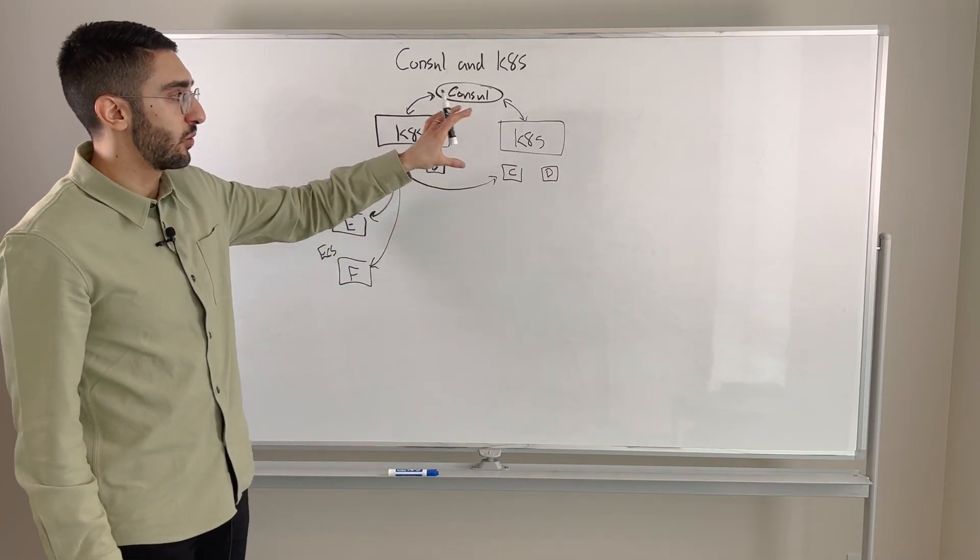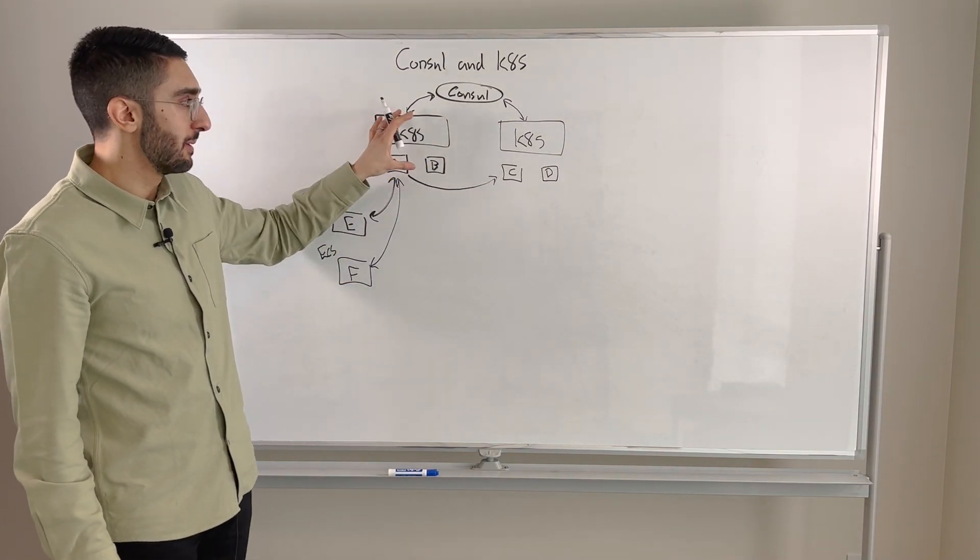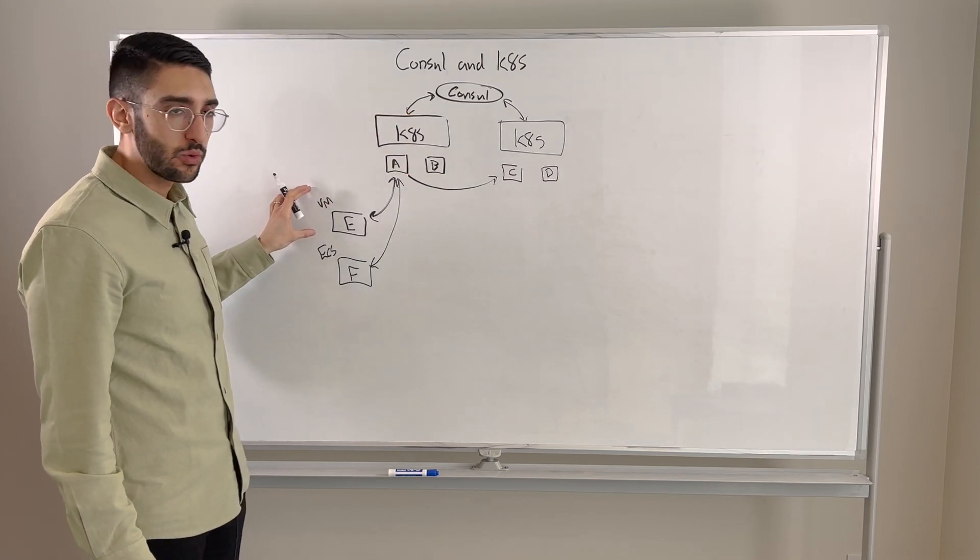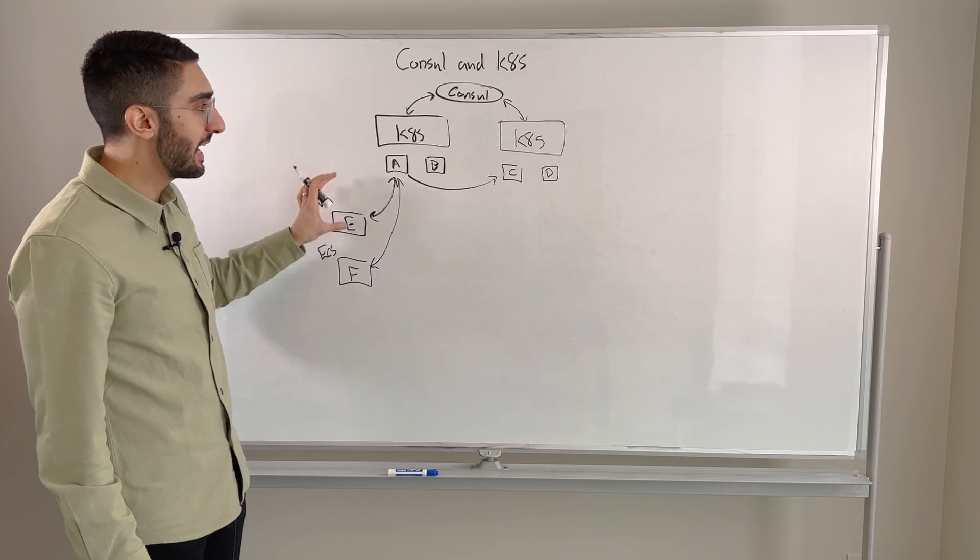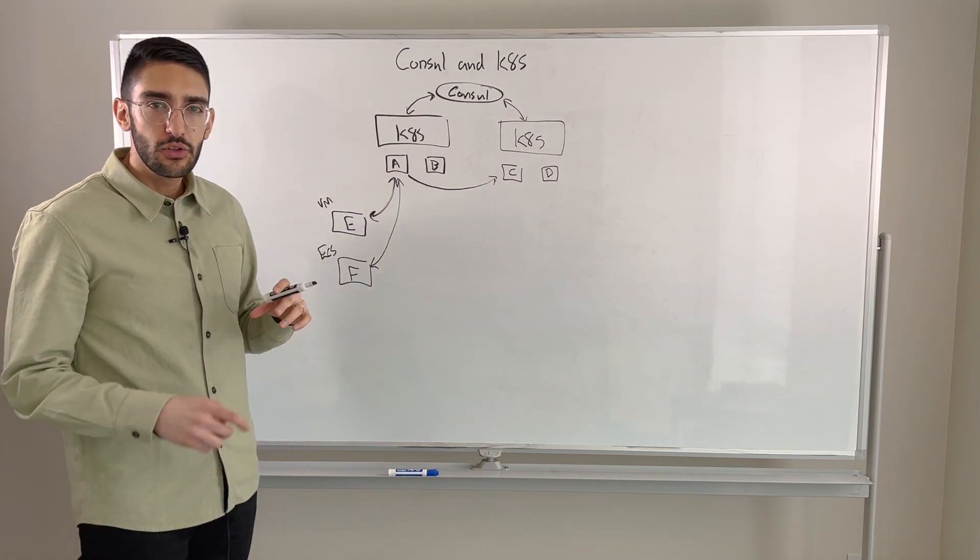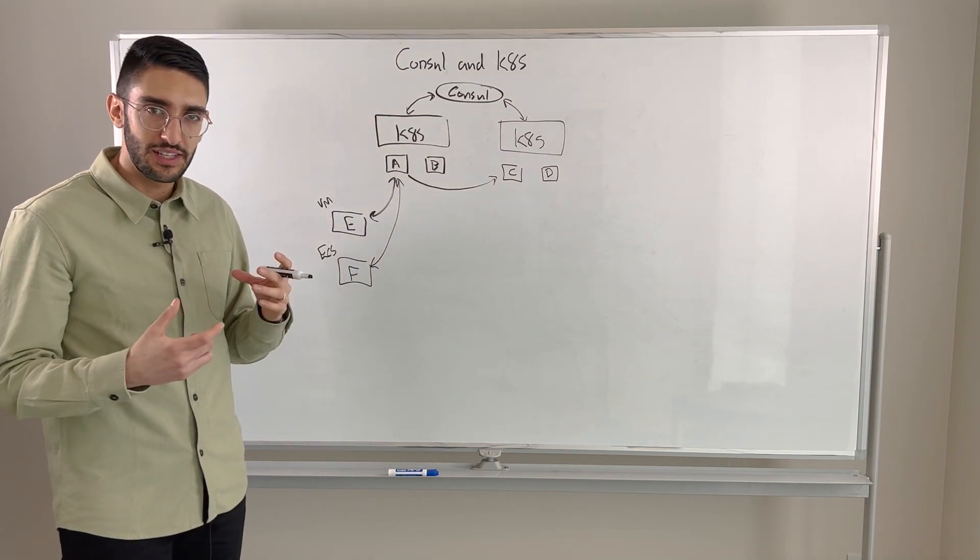So the first layer where Consul really comes in is acting as sort of a universal service discovery layer. That might be across multiple Kubernetes clusters, it might be between our Kubernetes and our VM-based workloads, or it might span multiple container native platforms such as ECS and Kubernetes. So this becomes kind of the first part is how do all these things discover one another?